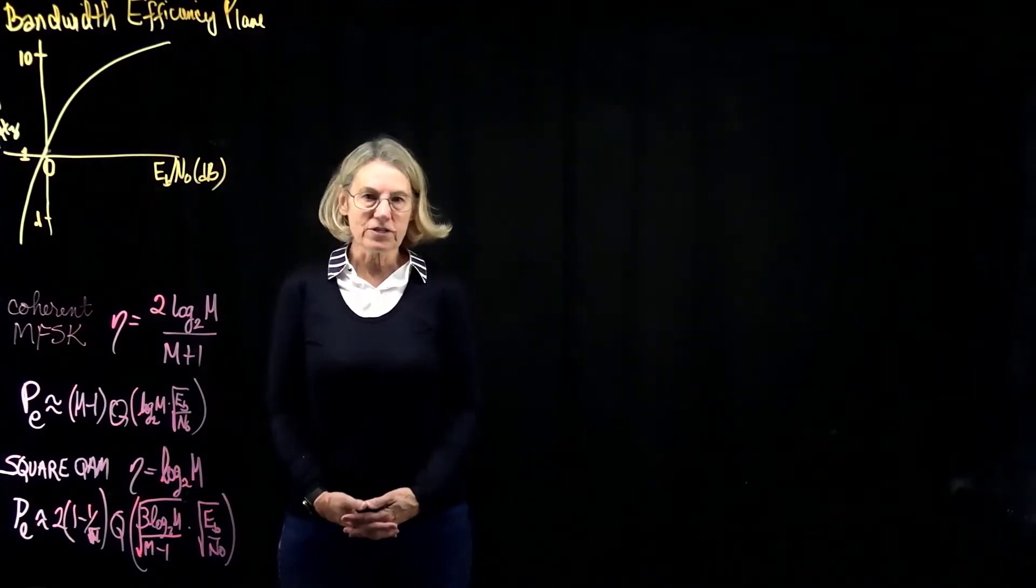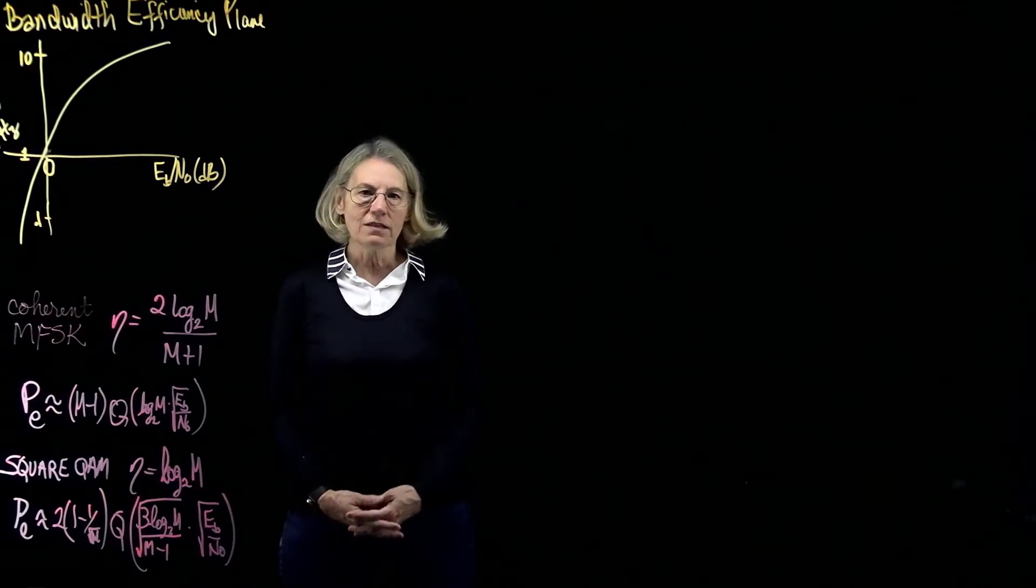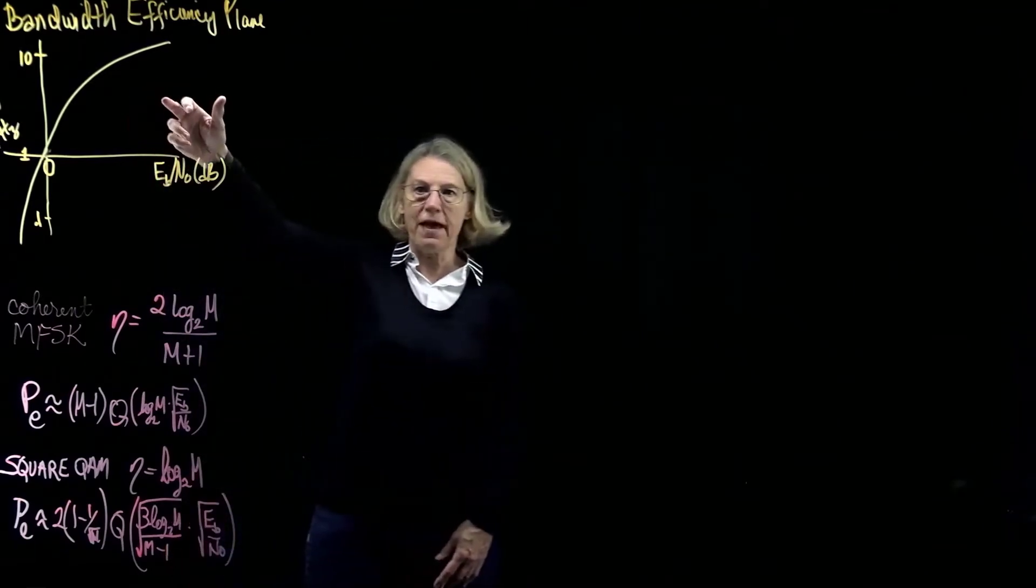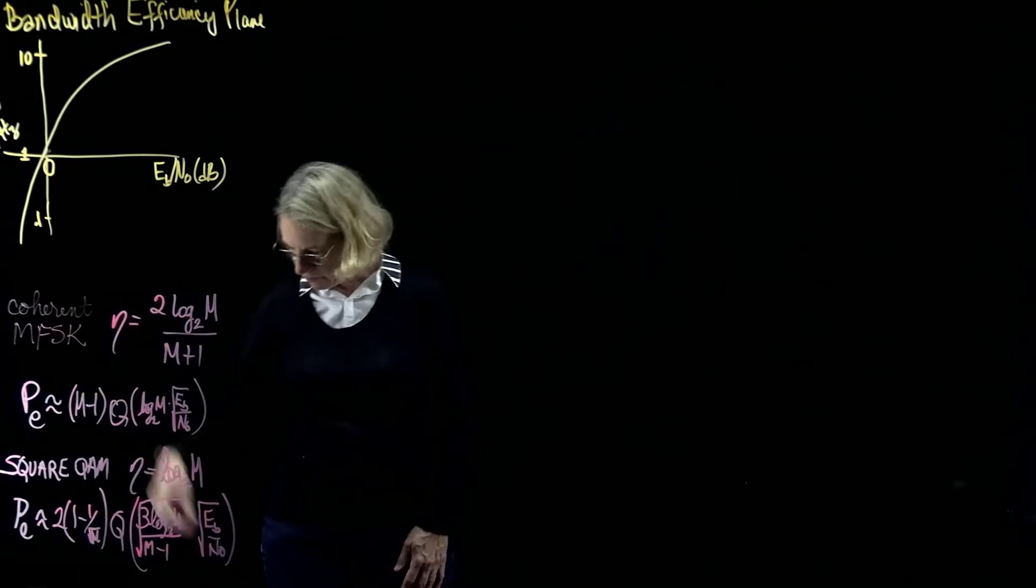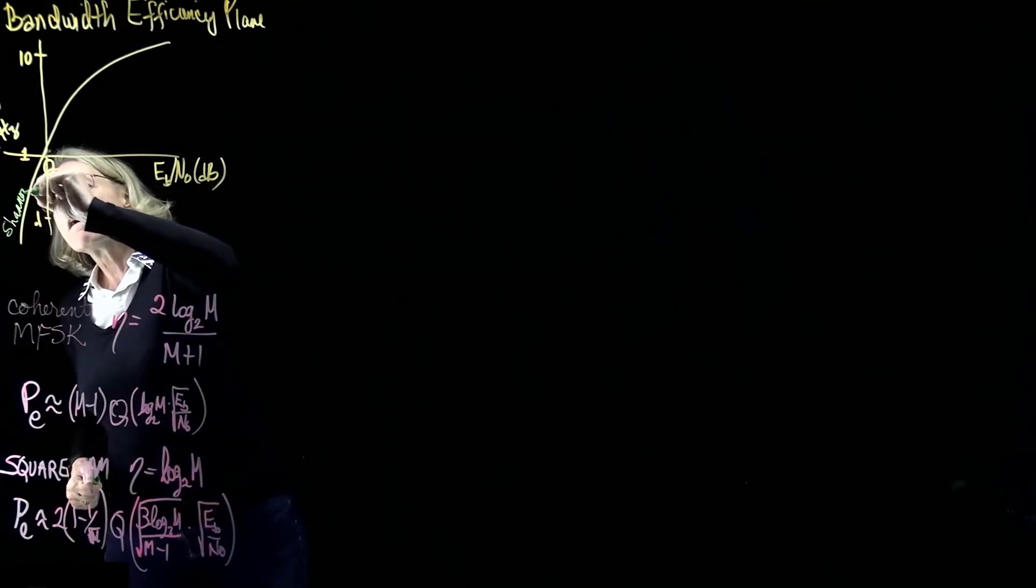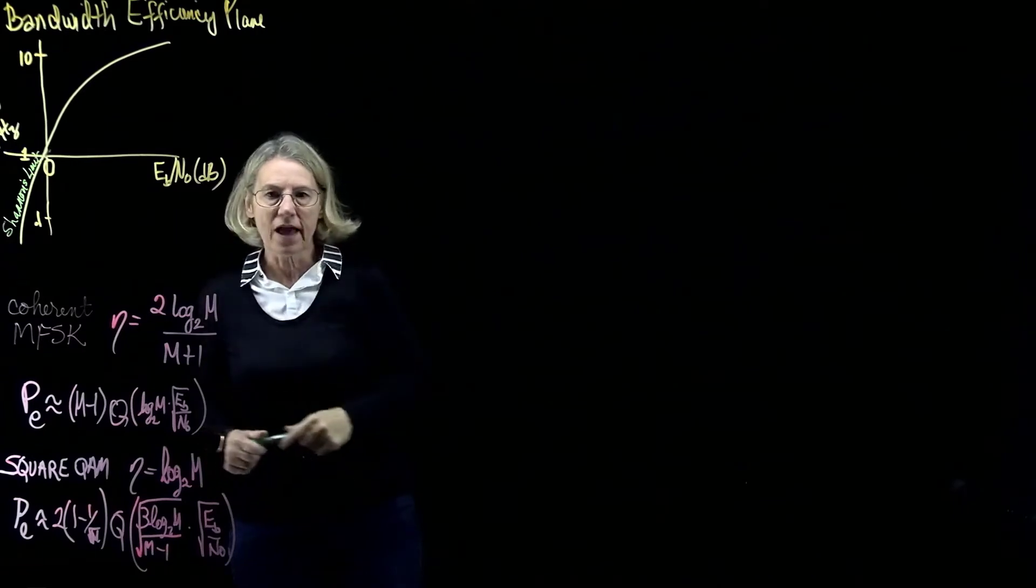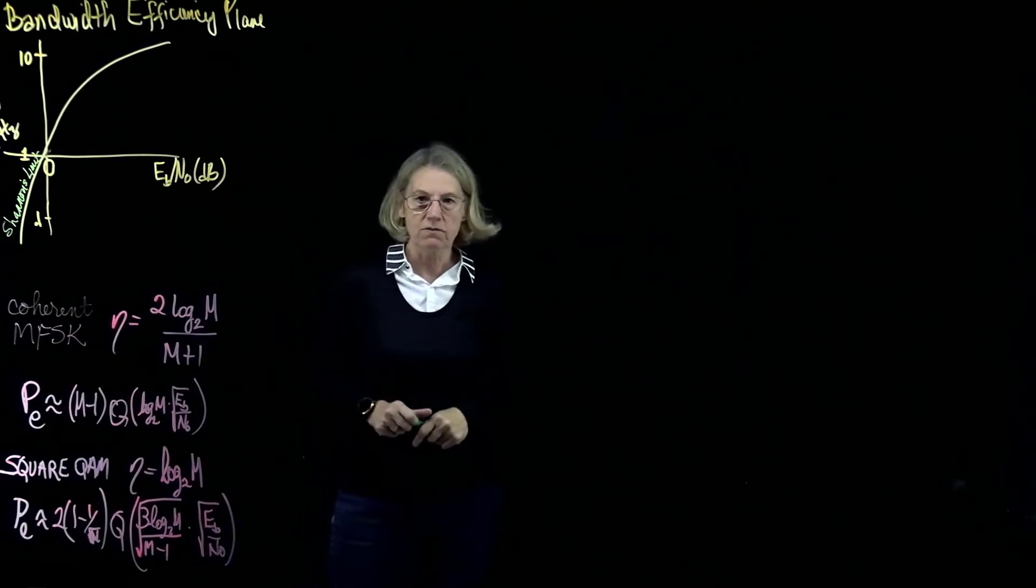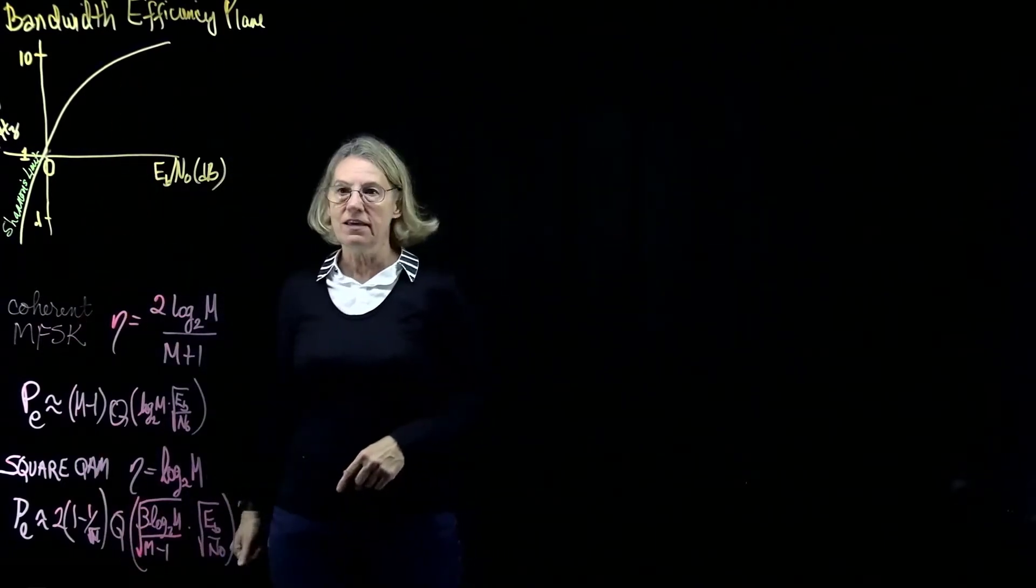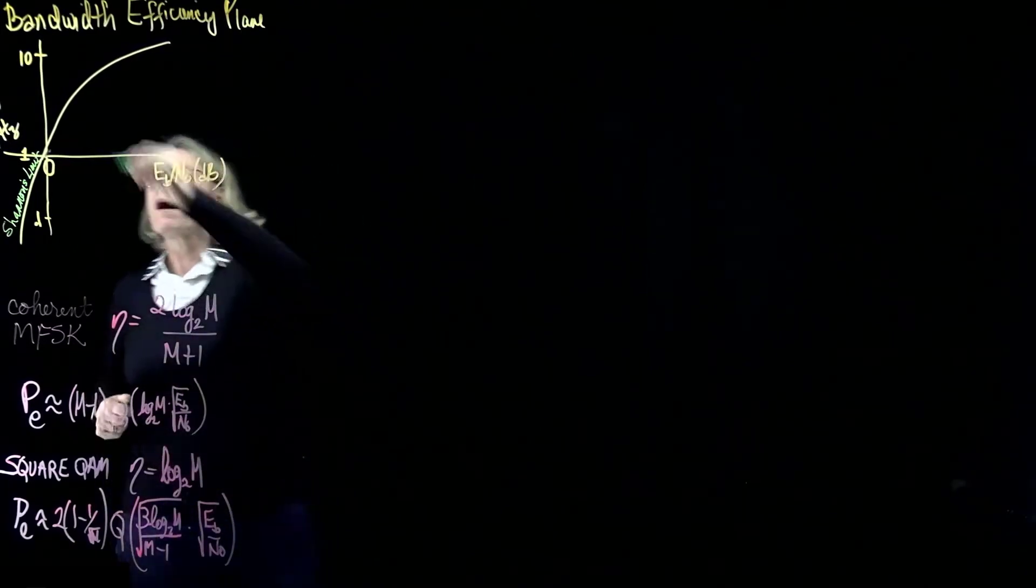Now we're going to look at the second question in the 2017 midterm exam, exam 1. In this question, we're asked about the bandwidth efficiency plane. So what is the bandwidth efficiency plane? Well, that's a plot where we have Shannon's limit plotted here. So this is a plot where in the x-axis we have the EB over N0, the signal-to-noise ratio in dB. And then in the y-axis we have the bandwidth efficiency.